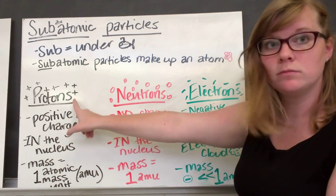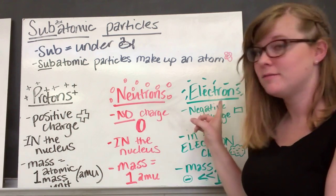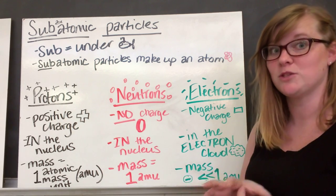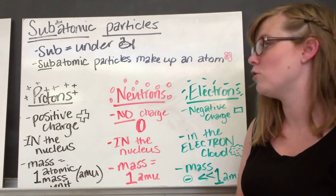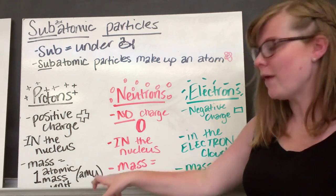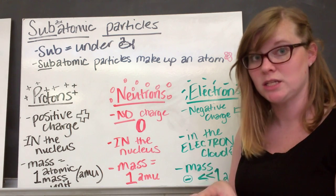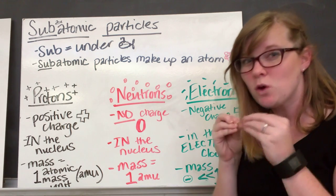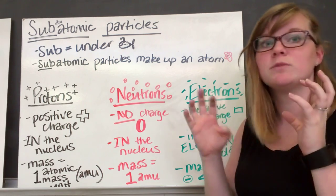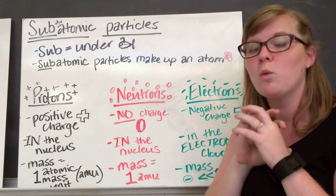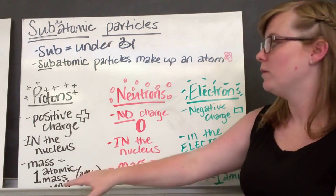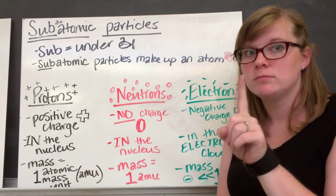First are protons — positively charged subatomic particles. They're found inside the nucleus and they have a mass of one atomic mass unit. This is a mass so small we made it its own unit — measuring it in grams, ounces, or pounds would be way too small. So the mass of a proton is one atomic mass unit.